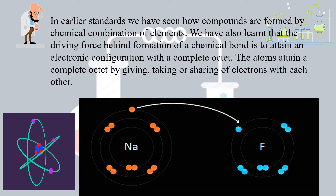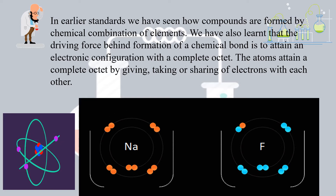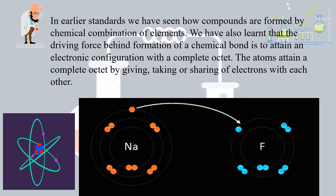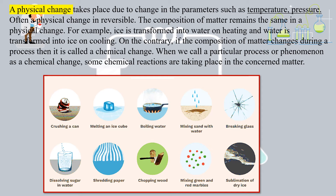We have seen how electrons are donated, accepted, or shared to form bonds with each other. This is all that we have already learnt. So what are we going to learn in today's class? Physical and chemical changes are important for us to understand in order to get to chemical equations and chemical reactions. A physical change takes place due to change in parameters such as temperature and pressure.